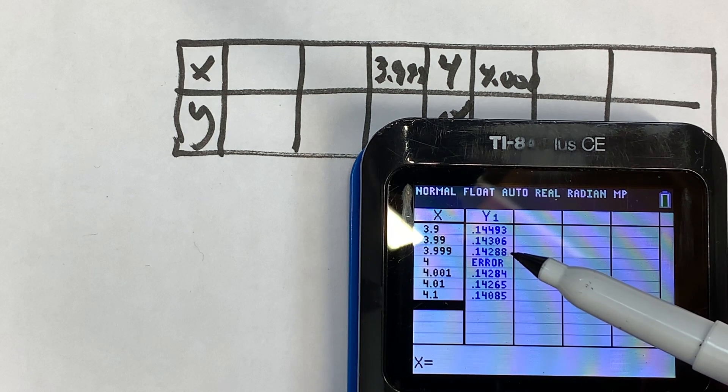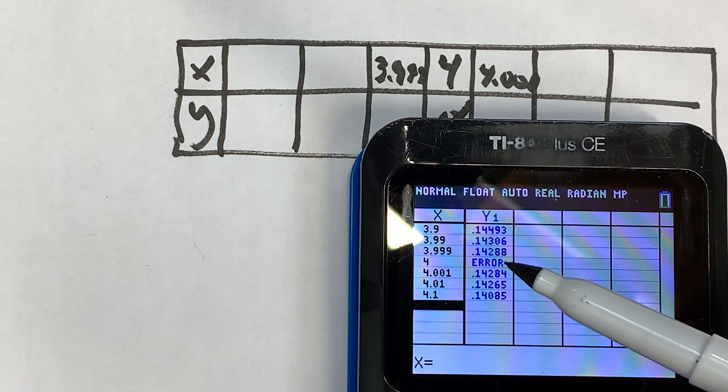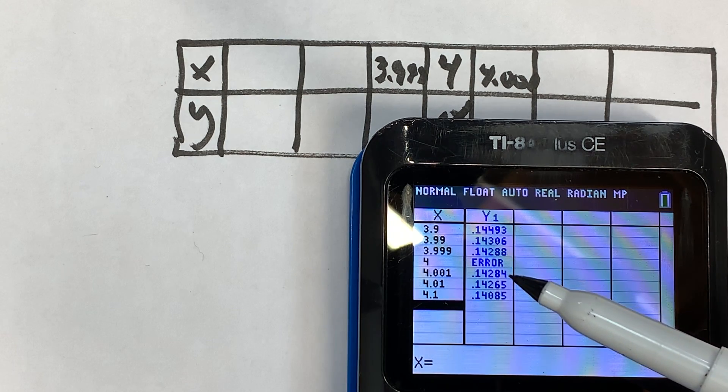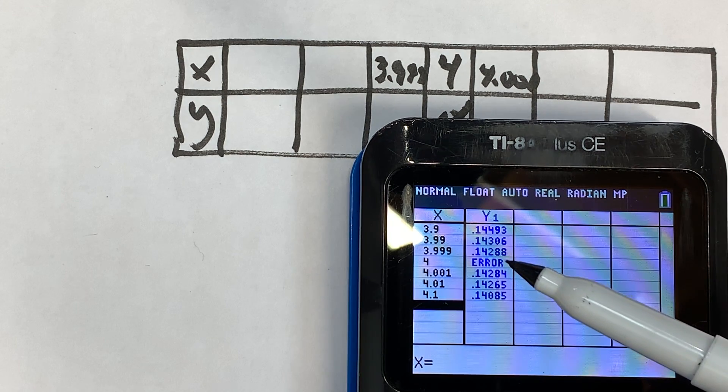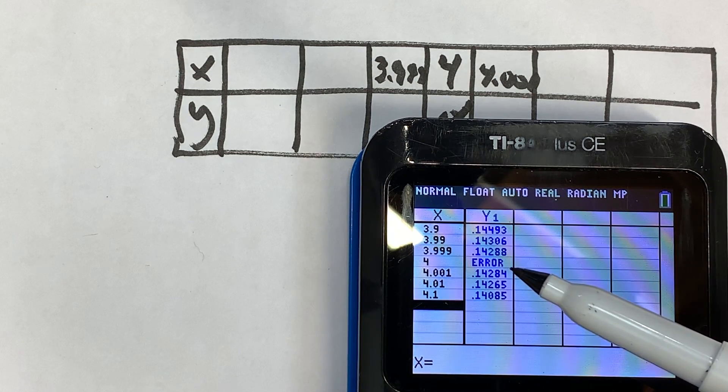And you can see it's getting closer and closer to 0.1428, and so that's going to be your limit: 0.143. I'm just going to round approximately.